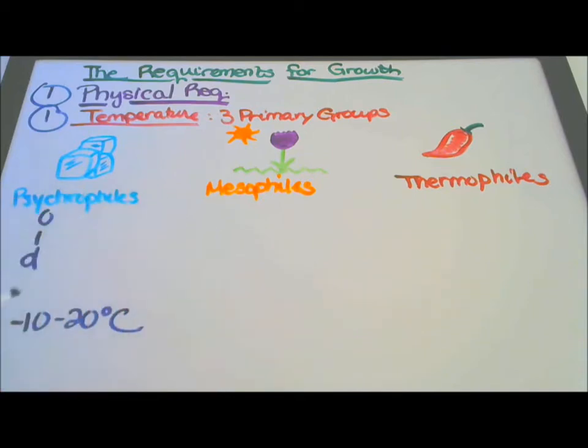Psychrophiles can grow in cold temperatures, negative 10 to 20 degrees Celsius.